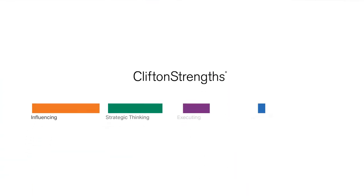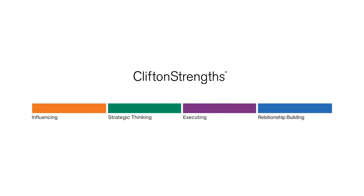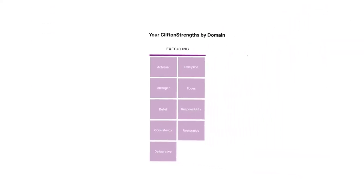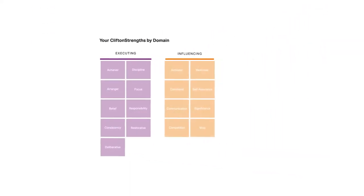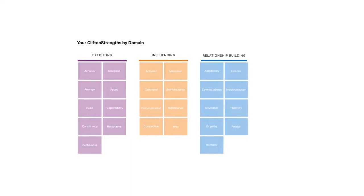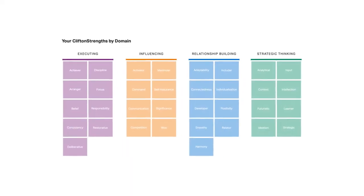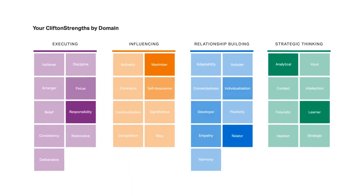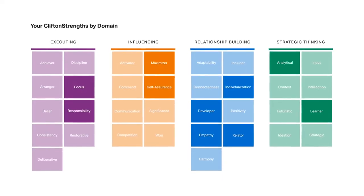So you've now discovered all your 34 CliftonStrengths. The next part of your report provides a deeper look at the CliftonStrengths domains. You'll learn whether you lead with the executing, influencing, relationship building, or strategic thinking domain. And you'll see how your unique results sort into the four domains.